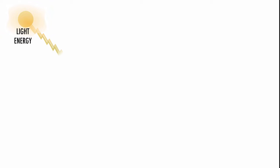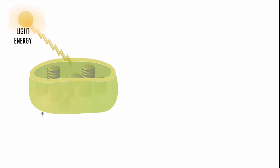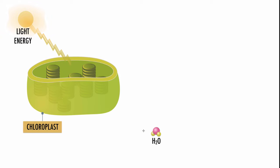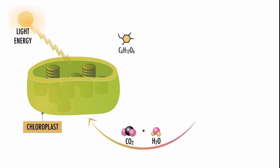It all starts with the sun. Energy from the sun reaches the chloroplasts of a plant, and by taking in water and carbon dioxide, the chloroplast will convert energy from the sun into energy locked in the bonds of glucose. Oxygen is also released as a byproduct. This process is called photosynthesis.